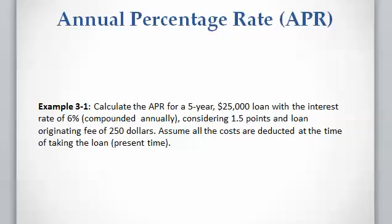Let's assume we are going to take twenty-five thousand dollars of loan at the present time, with an interest rate of six percent compounded annually, and we have to pay off the loan in five years. The costs are going to be 1.5 points and a loan origination fee of two hundred fifty dollars. Let's calculate the APR for this loan.